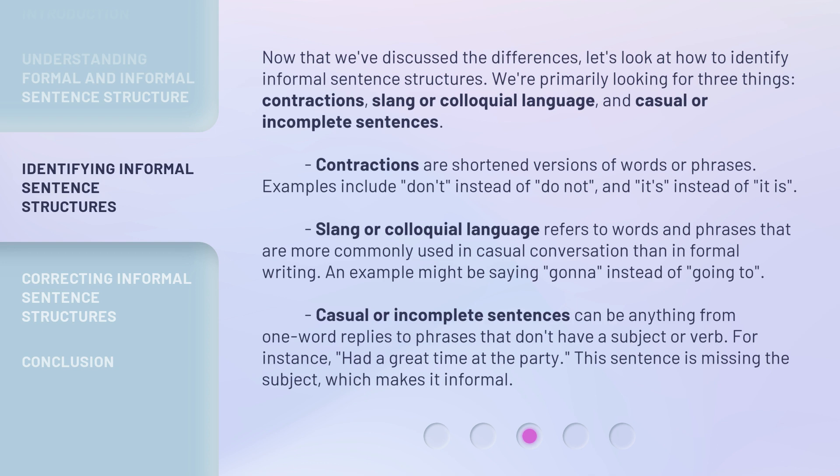Contractions are shortened versions of words or phrases. Examples include: 'Don't' instead of 'do not,' and 'It's' instead of 'it is.'